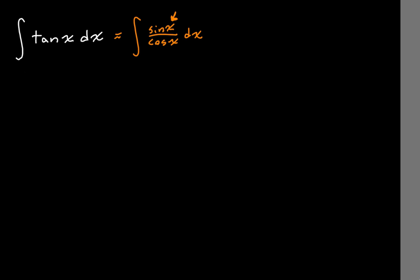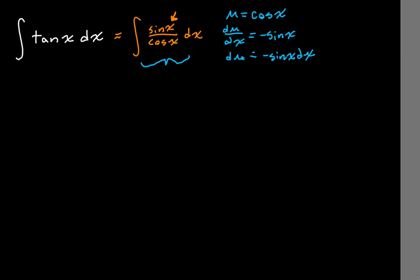When you're doing u-substitution, you tend to look for a function in this indefinite integral whose derivative is kind of like in the numerator. If we say that u is equal to cosine of x, then du will be equal to negative sine of x dx, though the whole multiplying both sides by dx thing is not quite what's going on there. But defining u and du in these ways is what's going to help us solve this problem.